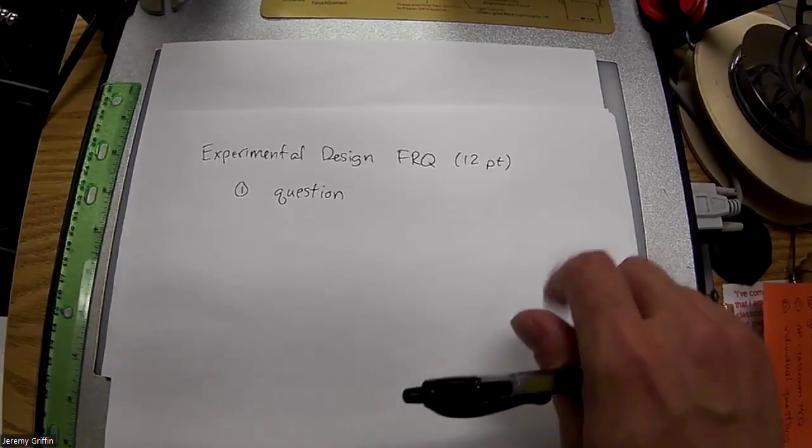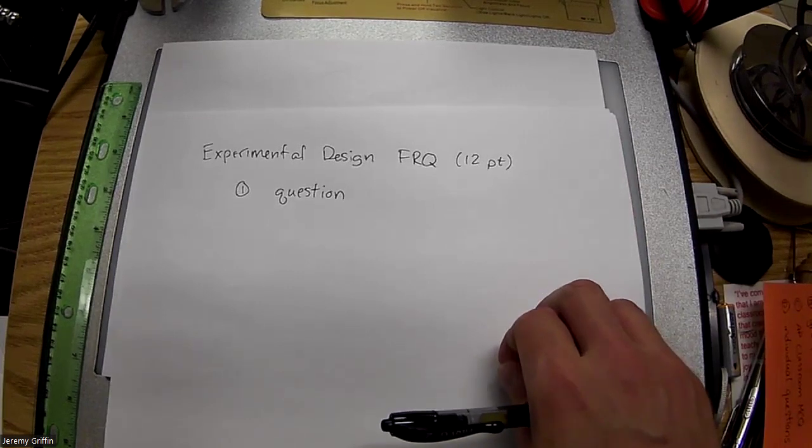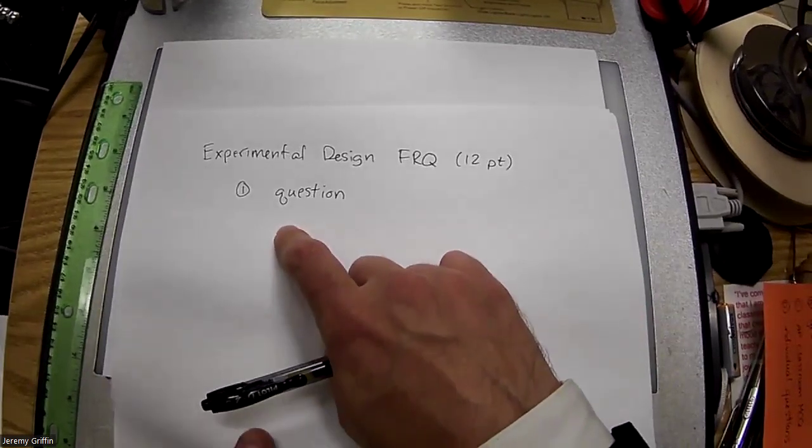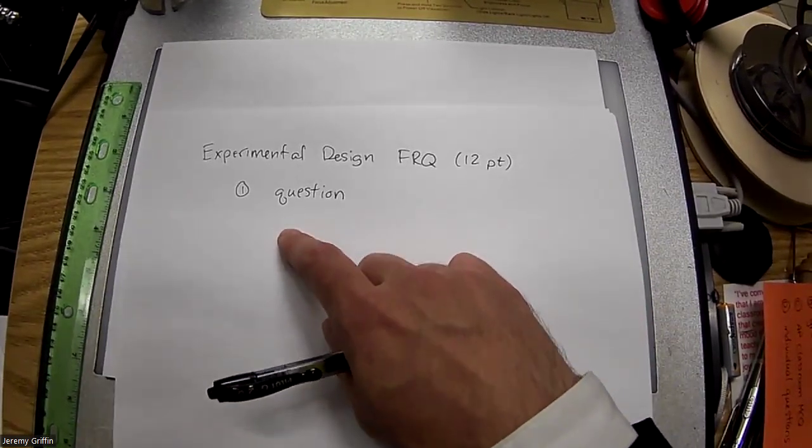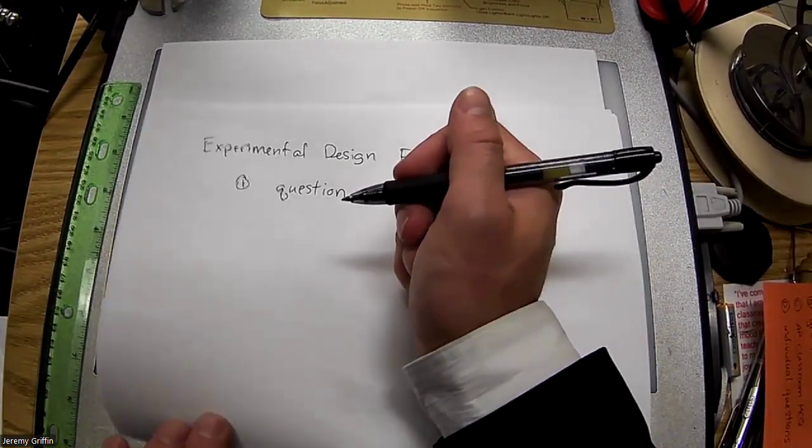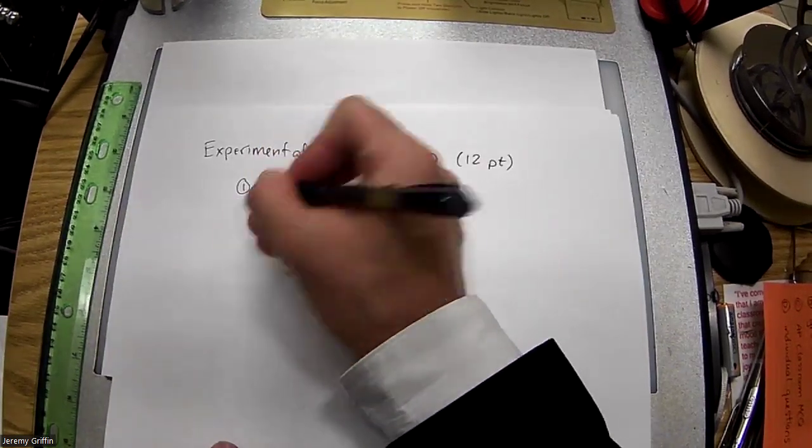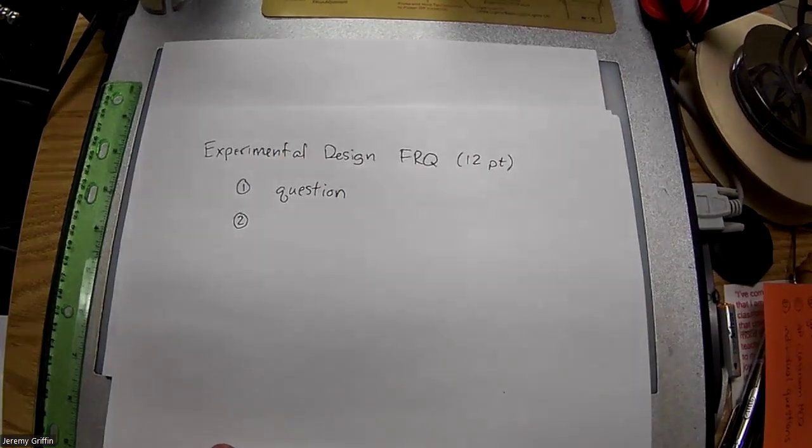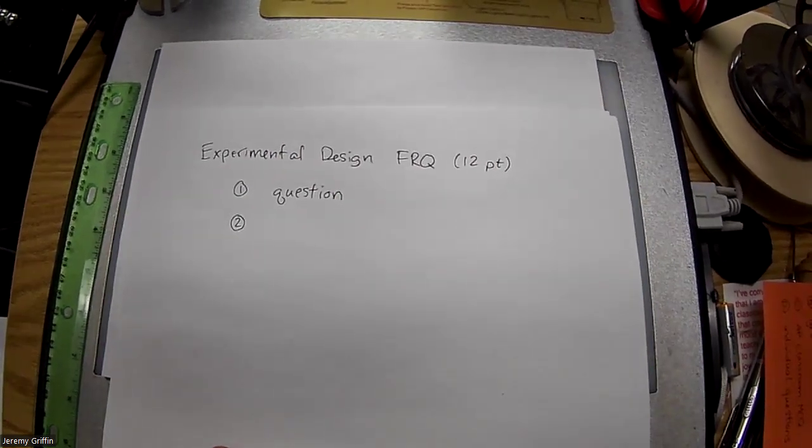It could be turntables, could be Atwood machines, could be inclines, could be collision carts, could be pendulums. They're going to ask anything, but it's going to be related to something we've been covering. And then they're always going to say... or maybe I should ask you guys, what's part two?